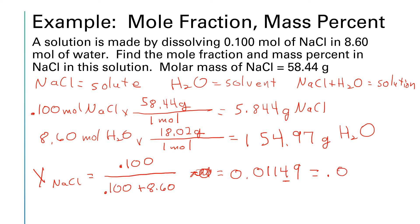For the percent of salt, we're going to take the mass of salt, which is 5.844 grams, and divide it by the total mass, which is 5.844 plus 154.97. Then we have to multiply all of that times 100. I'm going to pre-calculate that denominator to make sure my calculator is following the order of operations.